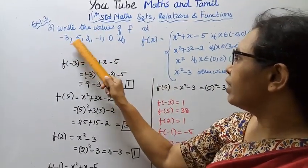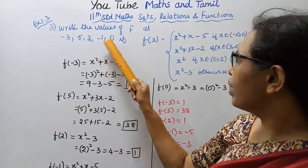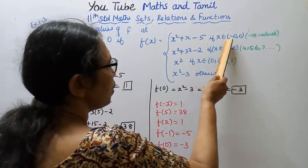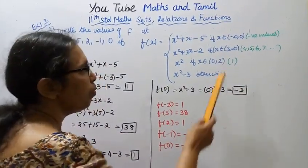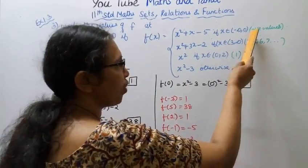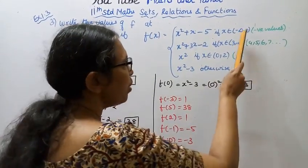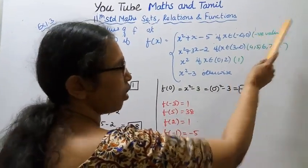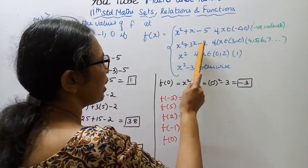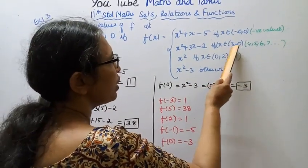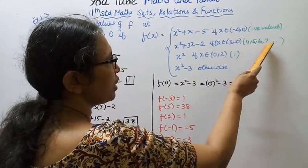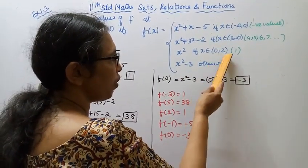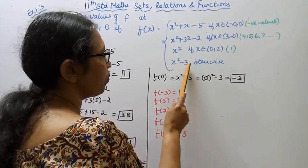Write the values of f at minus 3, 5, 2, minus 1, 0, if f(x) equals x squared plus x minus 5 if x belongs to minus infinity comma 0 (negative values); x squared plus 3x minus 2 if x belongs to 3 comma infinity; and x squared minus 3 otherwise (x in [0, 2]).